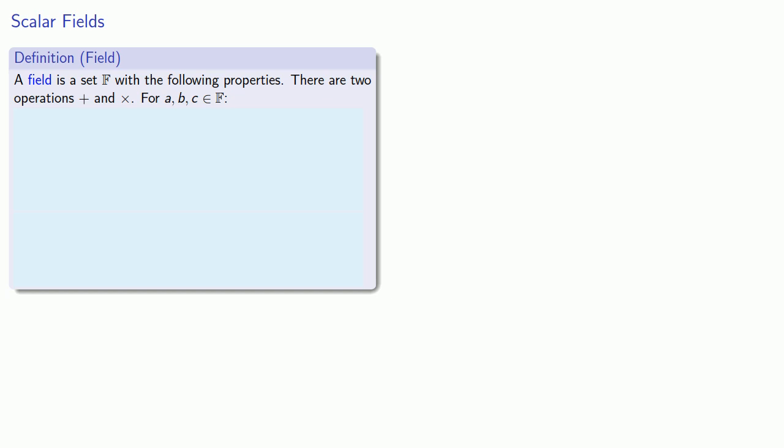For any three elements a, b, c in our set, the following properties must hold. First, we have to have closure. a times b and a plus b, whatever they are, must be elements of our field.